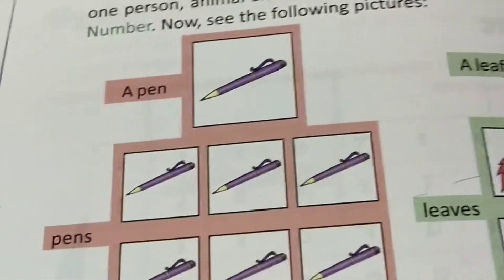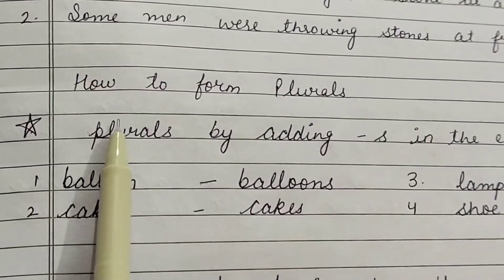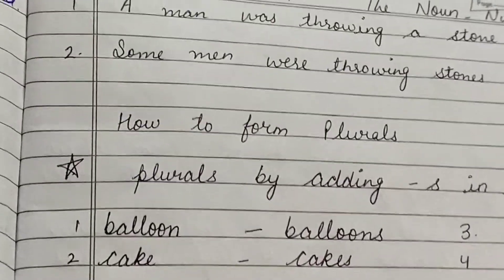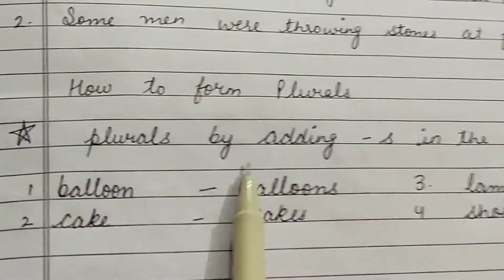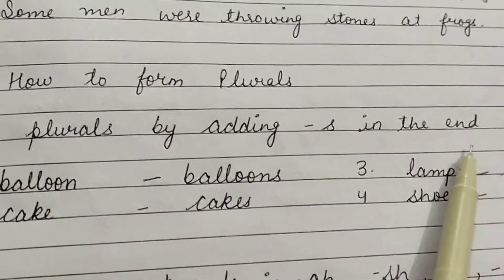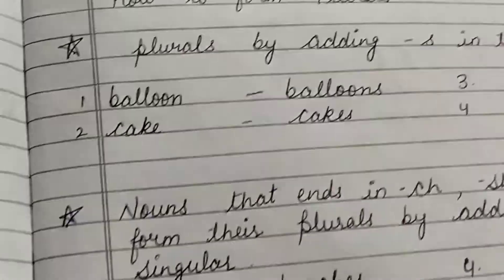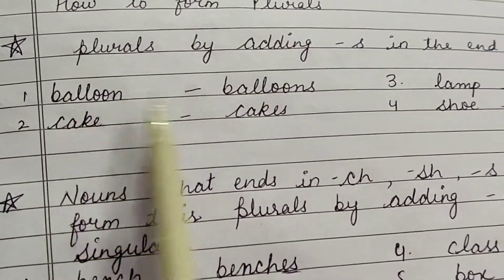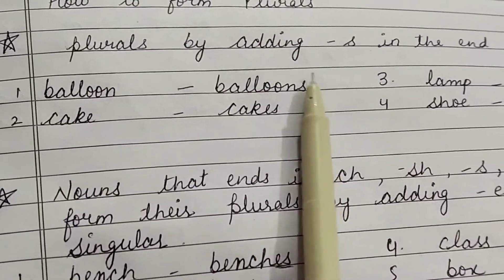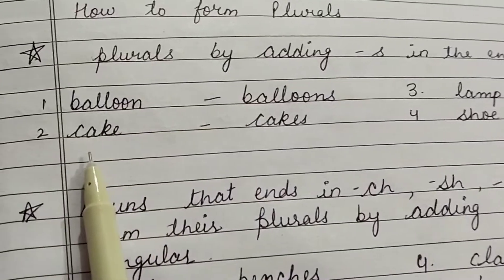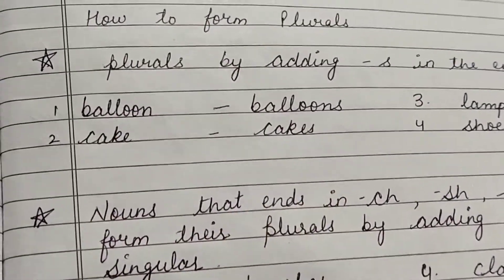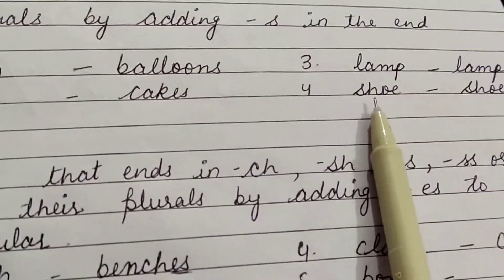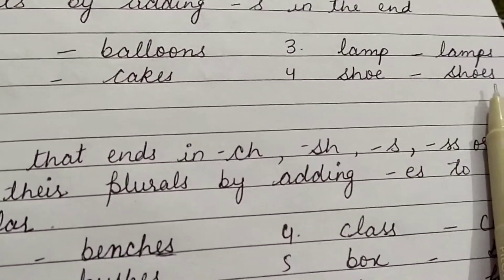We are going to study how to form plurals. Most nouns form their plural by adding -s at the end. For example: balloon → balloons, cake → cakes, lamp → lamps, shoe → shoes.